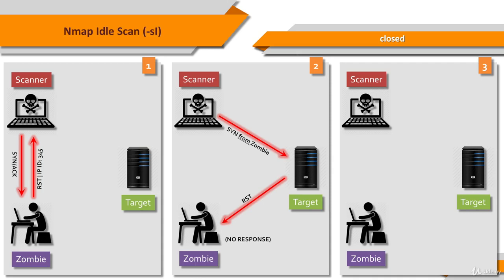The third step is to probe the zombie's IPID again. The attacker sends a SYN/ACK to the zombie again. The RST packet of the zombie has an IPID which is increased by only 1 since the first step, so the port is not open.